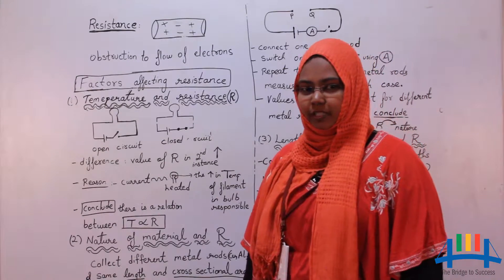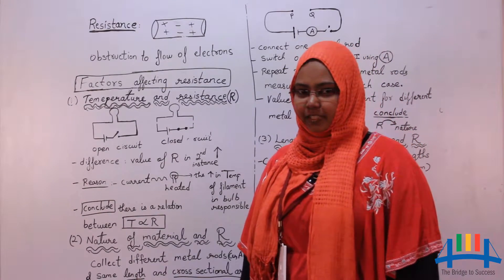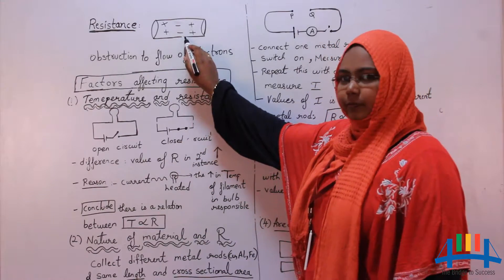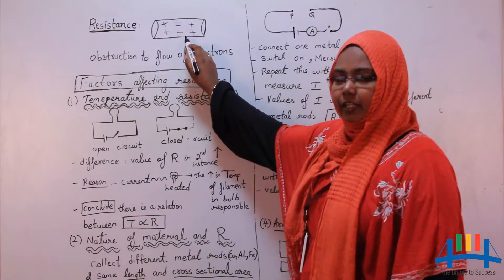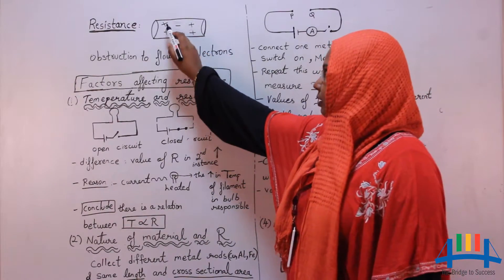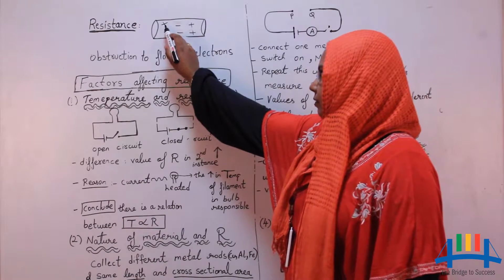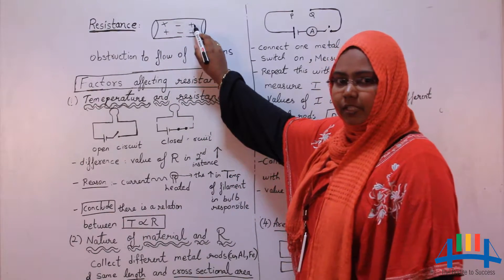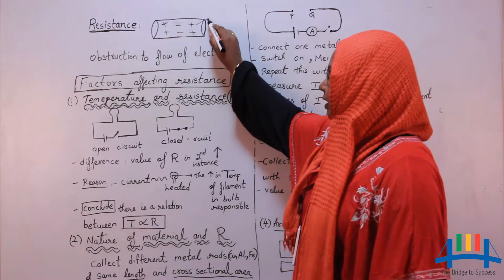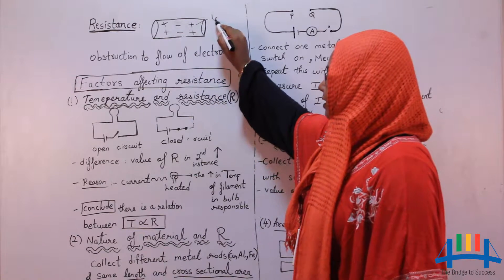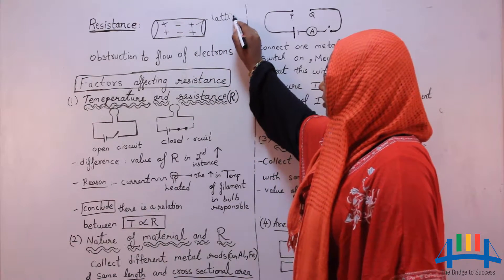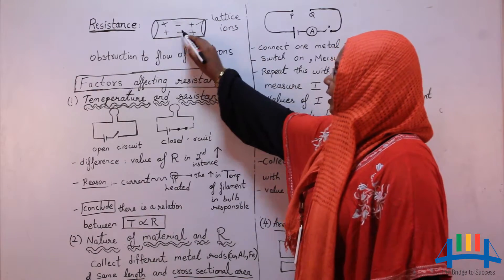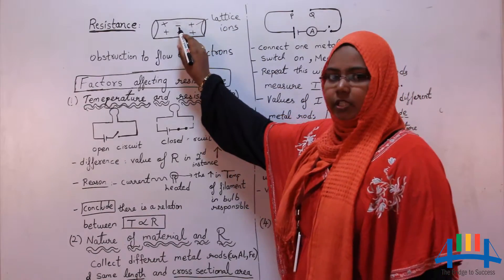Hello friends, today we are going to discuss about the topic resistance. Assume this as a conductor. In a conductor we have two types of charges, positive and negative. Positive ions are fixed at one place, so we call them as lattice ions. It is the negative ions which keep moving.